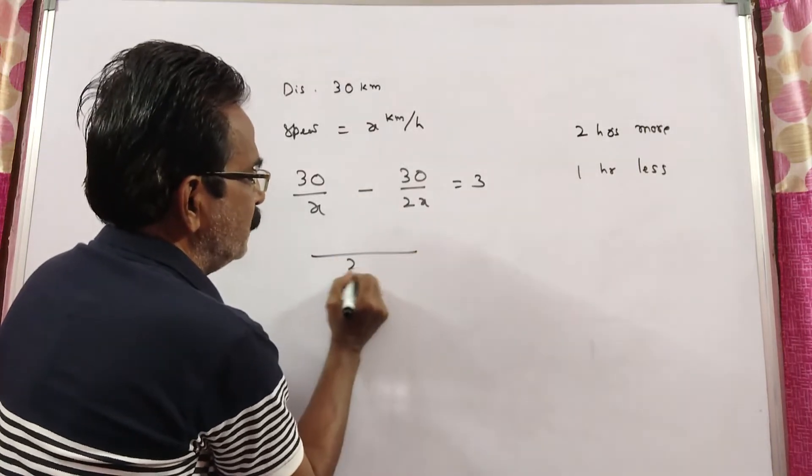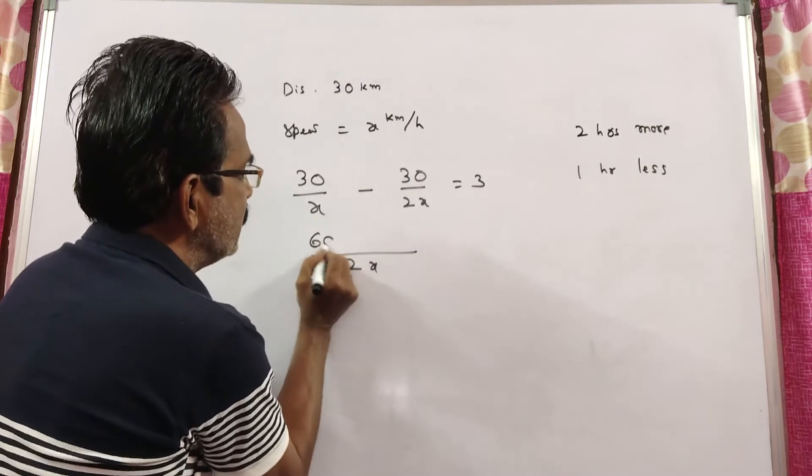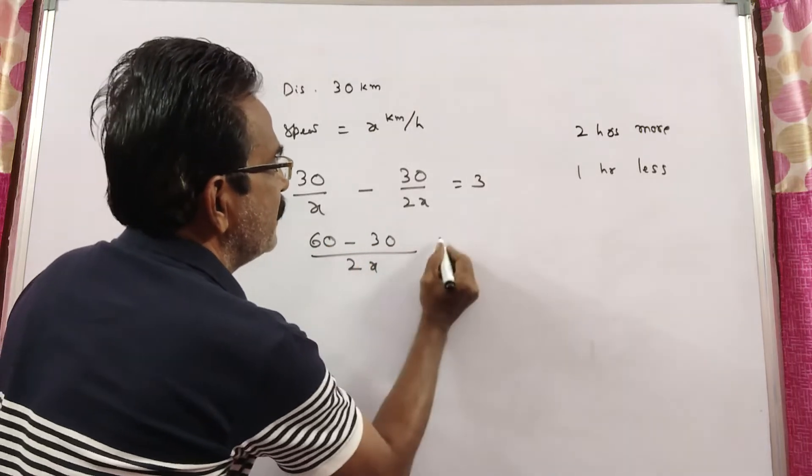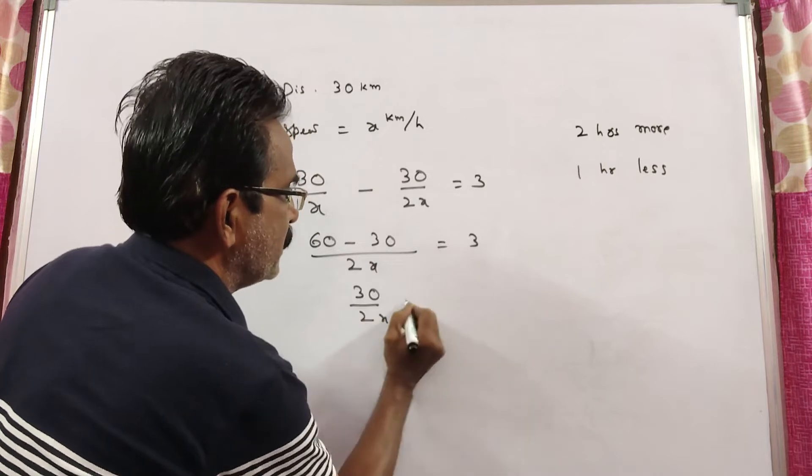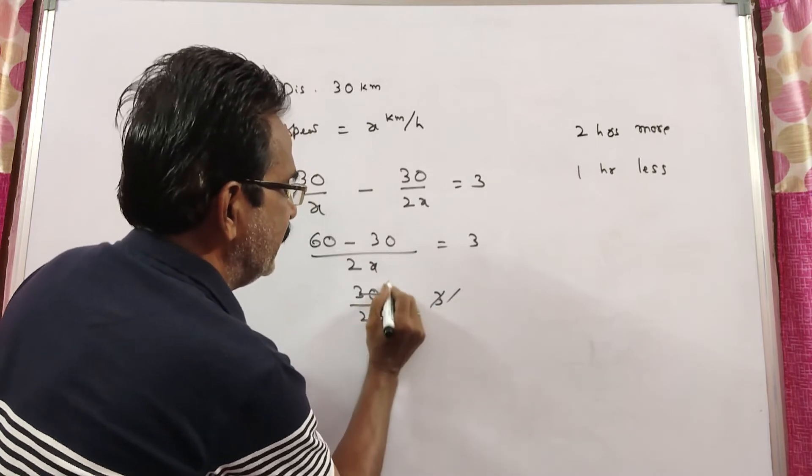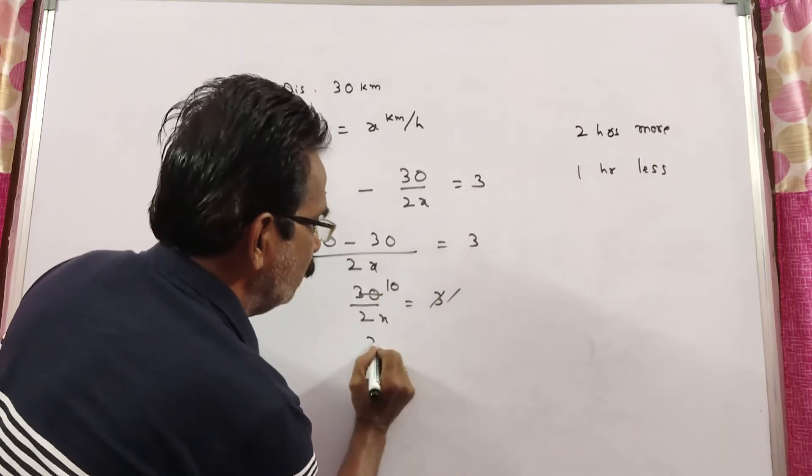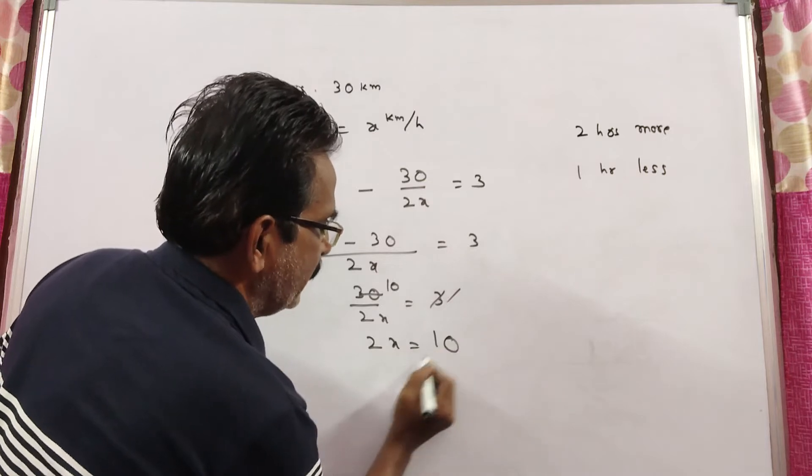Now, LCM 2x, 2 into 30, 60 minus 30 is equal to 3. 30 by 2x is equal to 3, 3 ones, 3 tens. So, 2x is equal to 10.